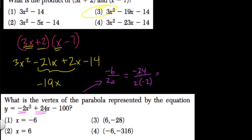So we have negative 24 divided by negative 4, which is positive 6. So that means x equals 6.